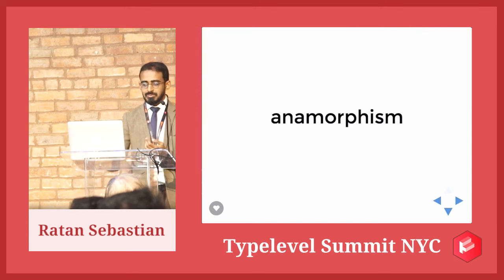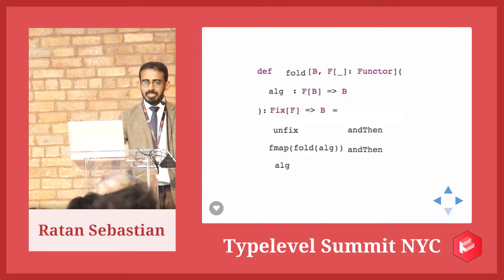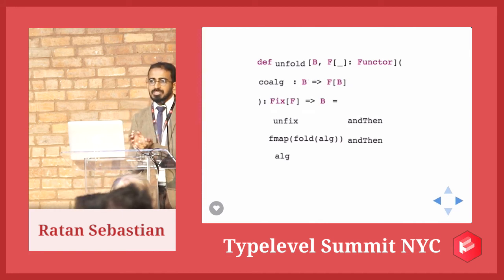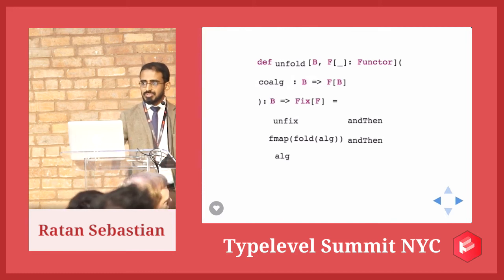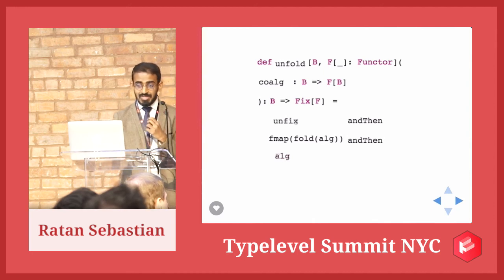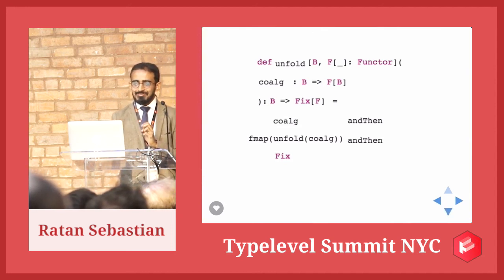This is our definition of fold. I'm going to rename fold to unfold, algebra to co-algebra, and flip the function. Algebra is a function from F B to B; co-algebra is a function from B to F B. This returns a function from B to Fix F instead of Fix F to B — it takes some value B and constructs a recursive data structure. The implementation is just flipping: co-algebra becomes the first thing you call, unfix goes to the end and becomes fix, and fmap of (fold of algebra) becomes fmap of (unfold of co-algebra). This compiles and probably does something — we've just flipped everything.